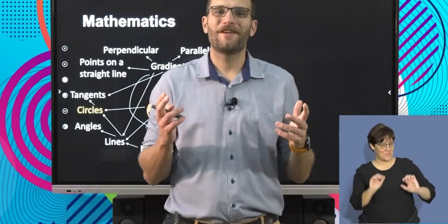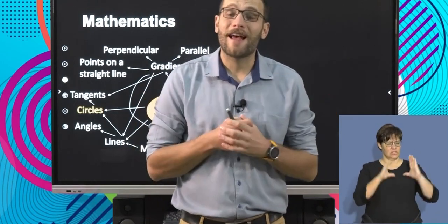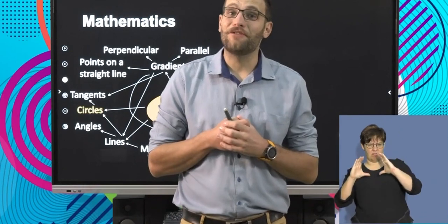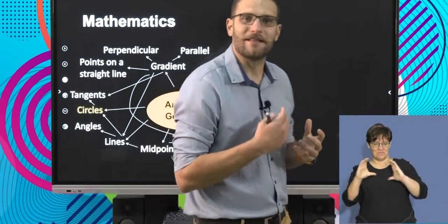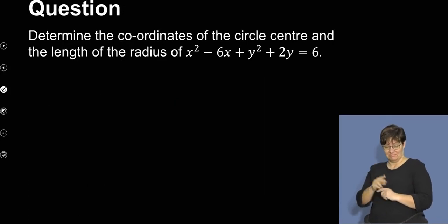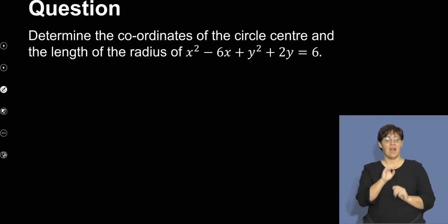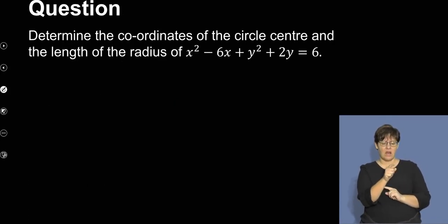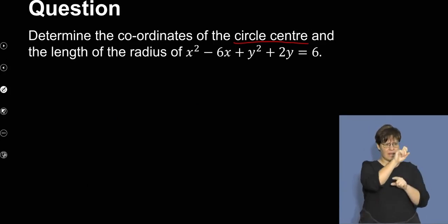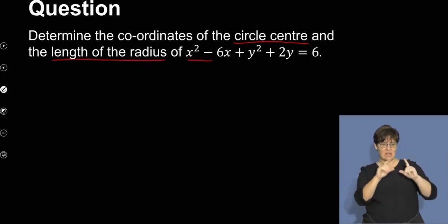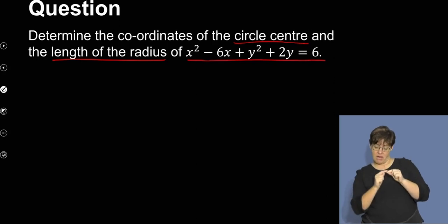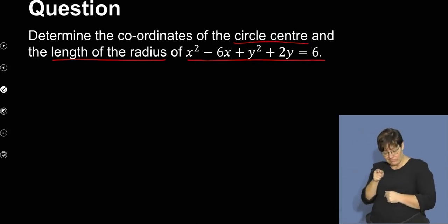Welcome back. We were talking about shifted circles and we're going to continue doing examples. Our first example says: determine the coordinates of the circle center — so they want me to find where the center of the circle is — and the length of the radius of that equation.